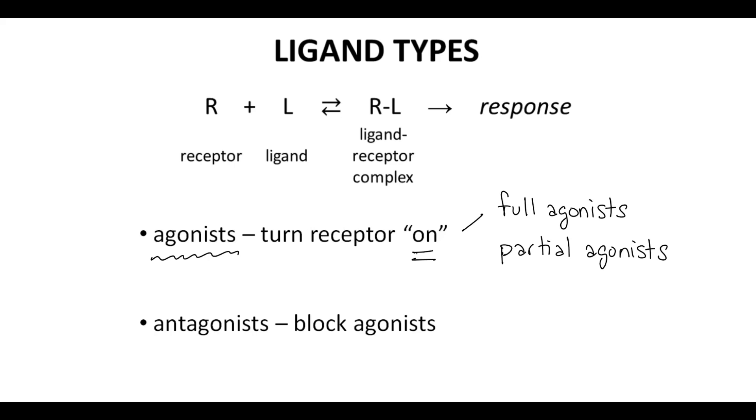It is possible for some ligands to bind a receptor and prevent other ligands from turning on the receptor, so there's no response. These ligands are called antagonists.